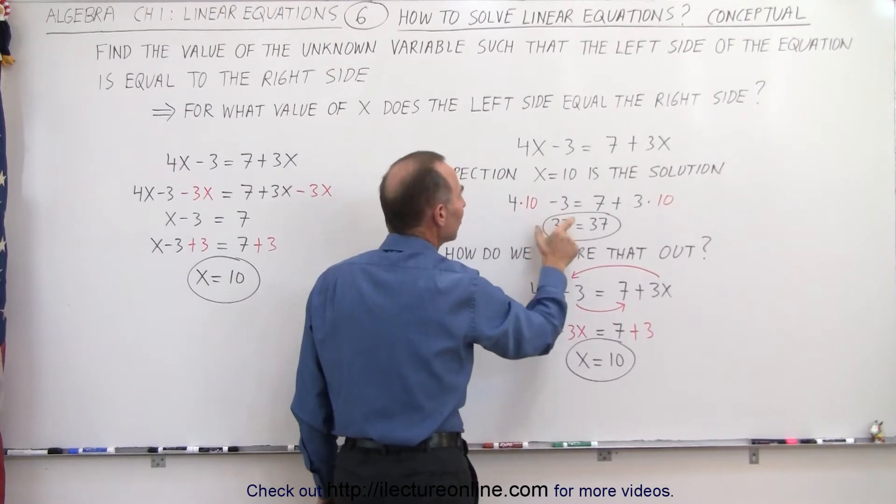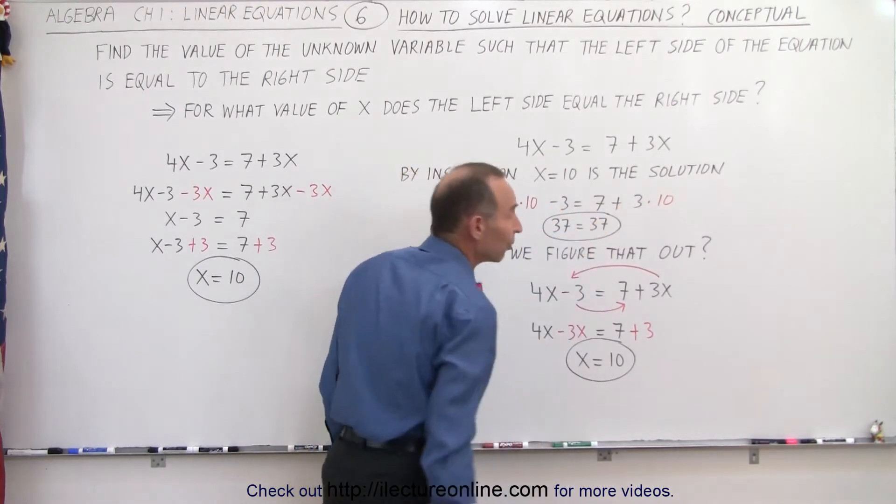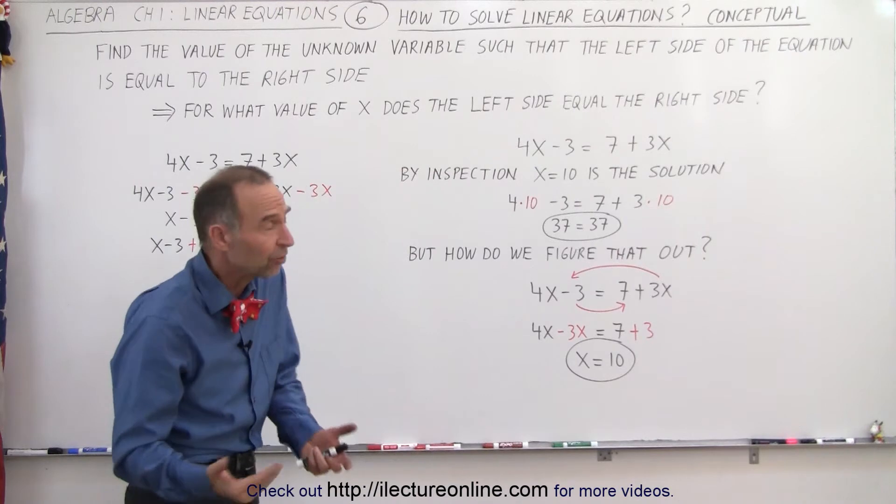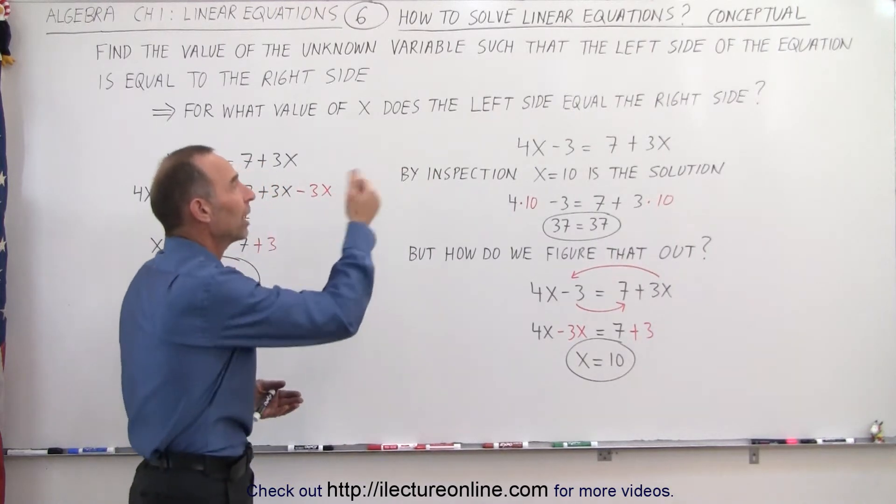Simply by replacing every x by 10, we can see that the left side is 37, and the right side is 37, which means that x equals 10 is the solution to that equation.